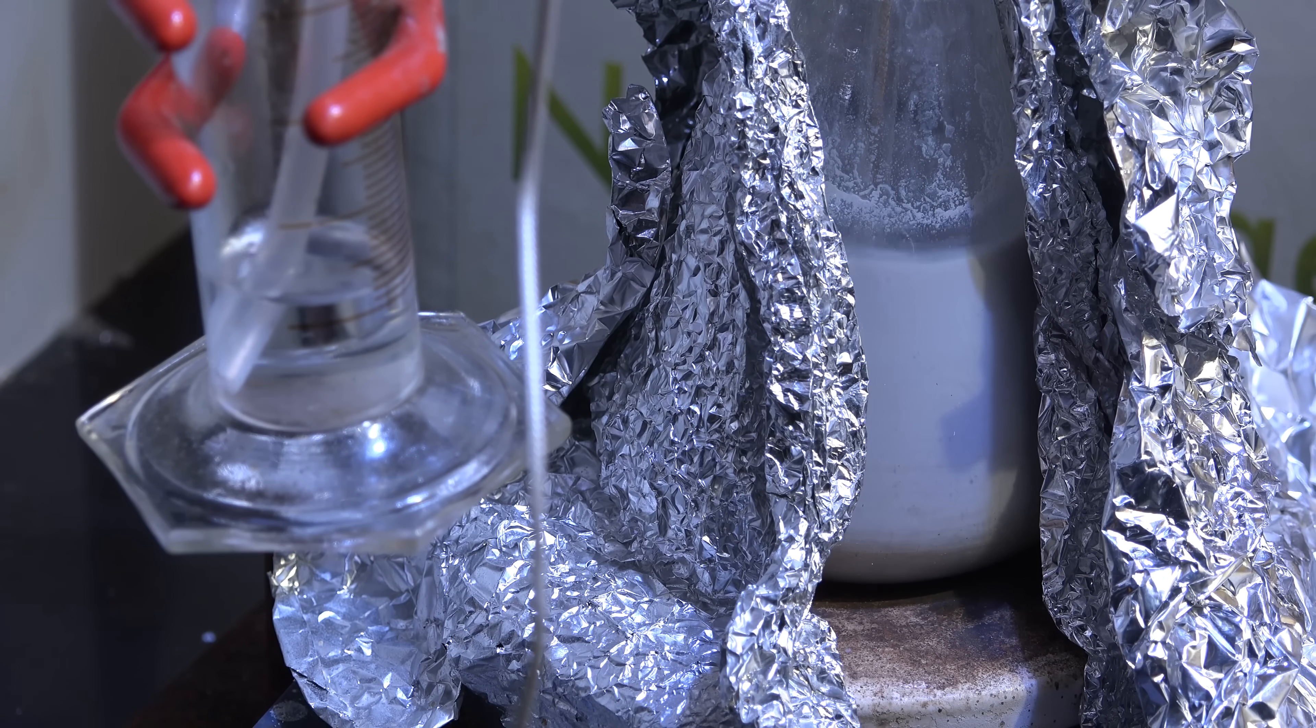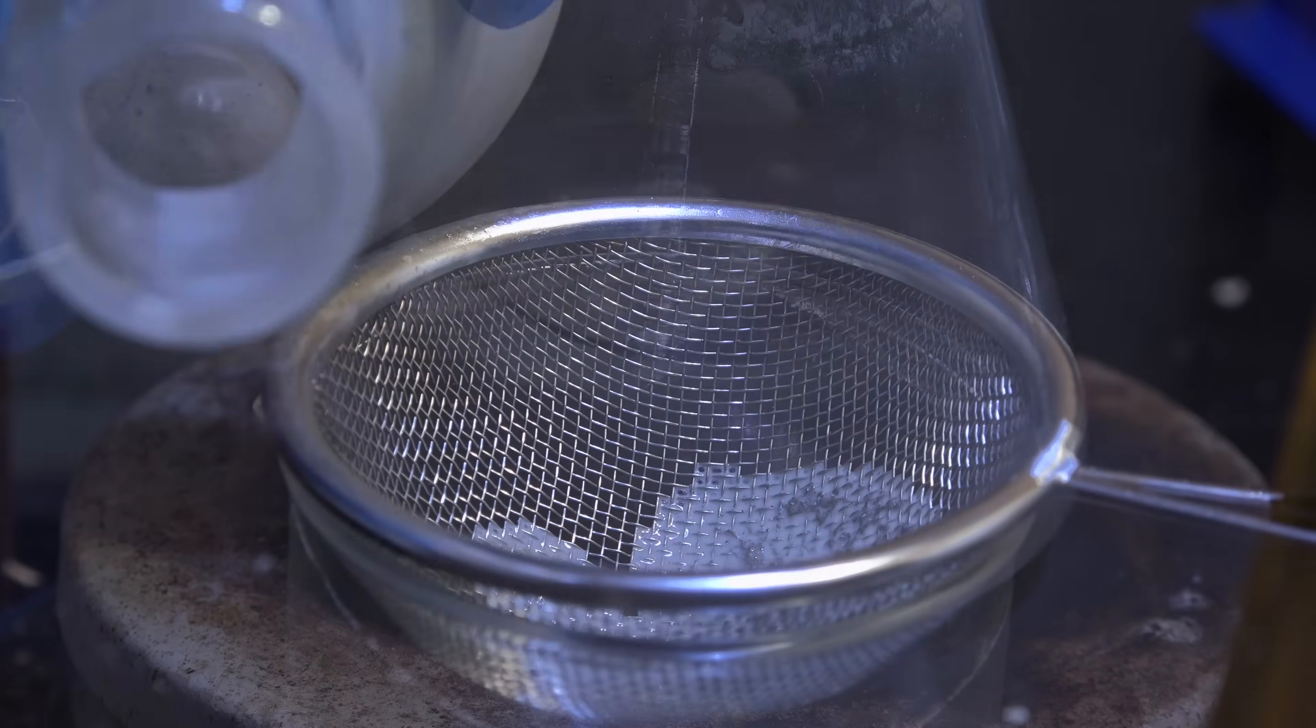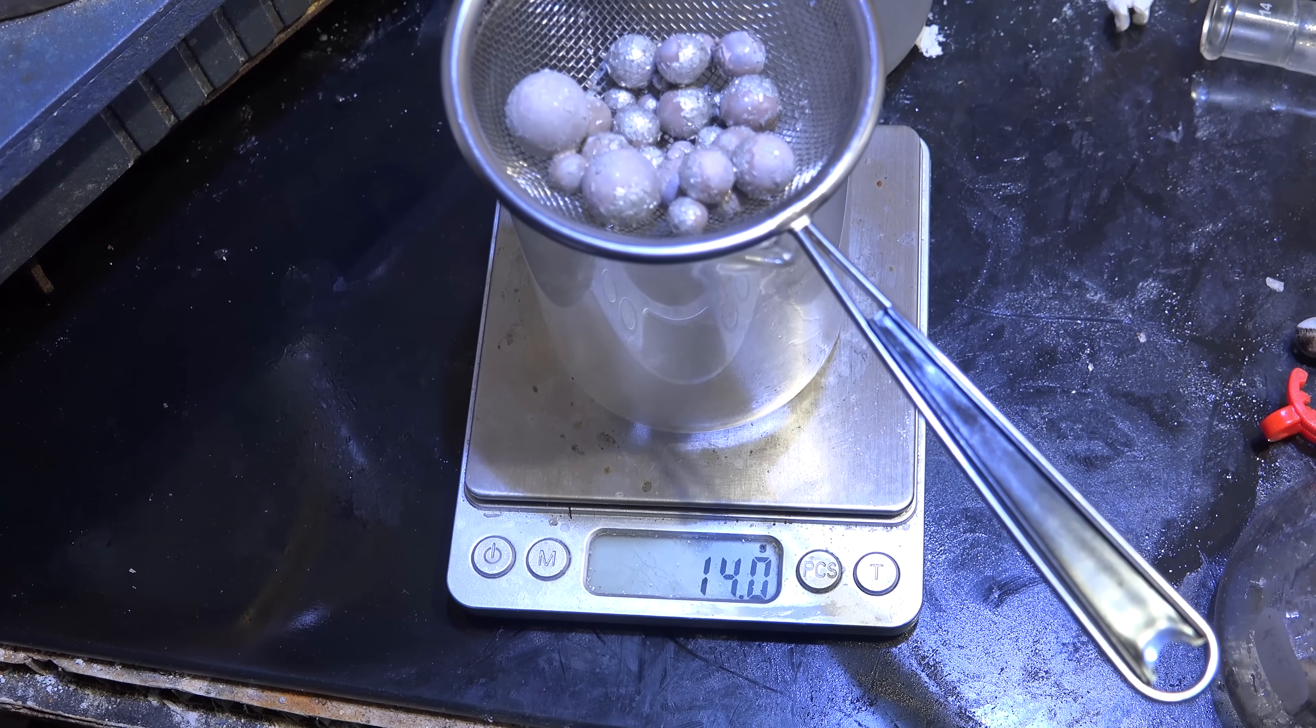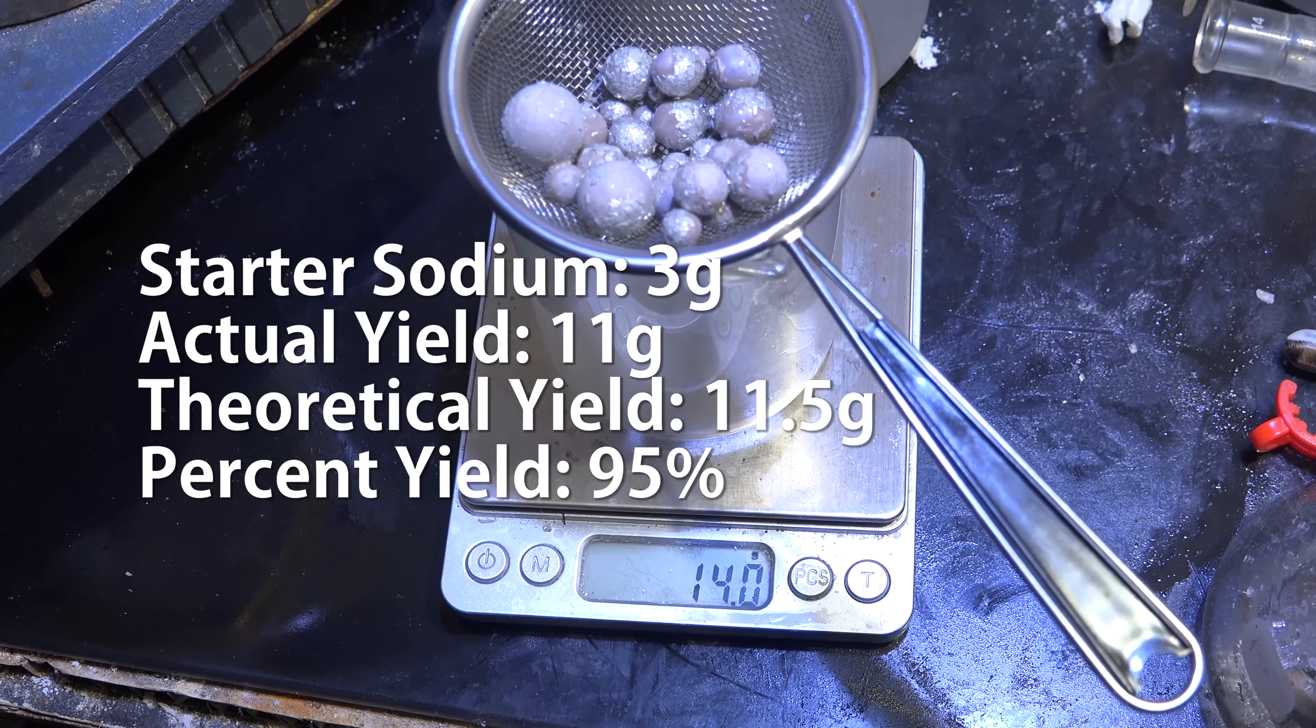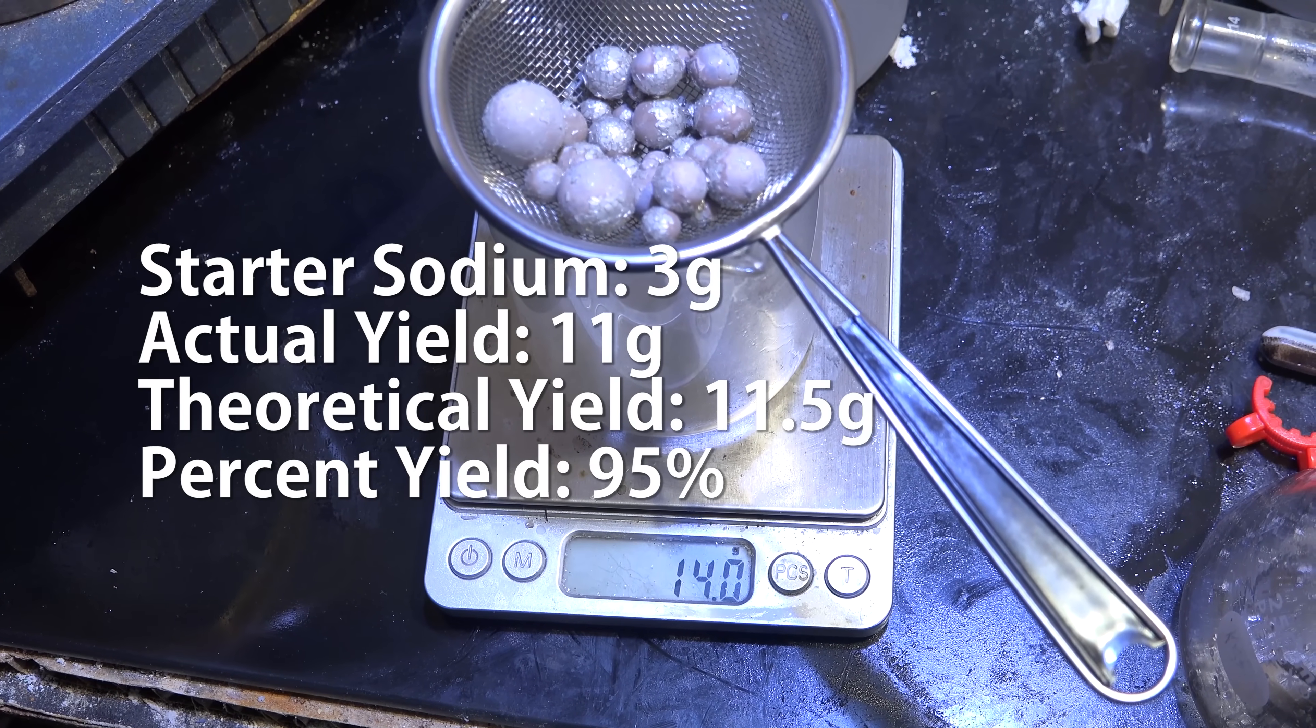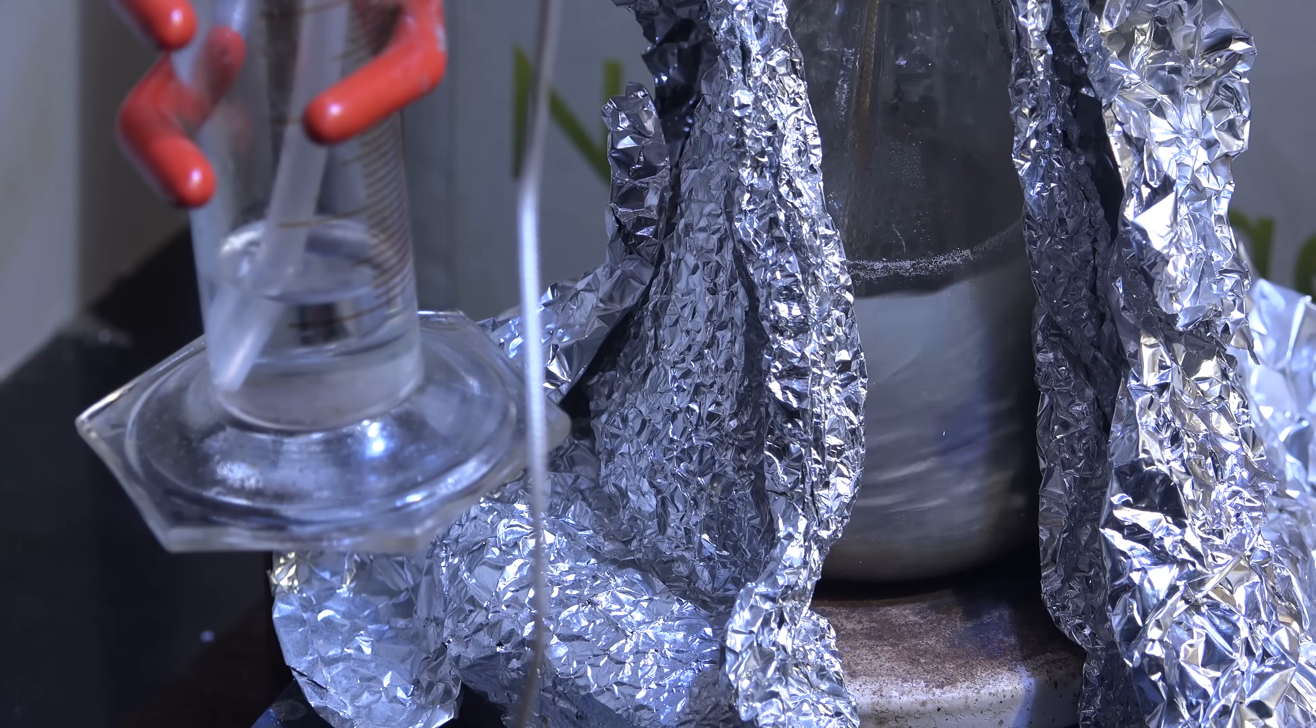In fact bubbling was extremely vigorous at first and slowed to a crawl after just 20 hours. I processed the reaction to get a yield of 14g but since we started with 3g of jumpstarter sodium, our actual yield is 11g or 95%. This is amazing, I honestly wish I knew of this before I started so I didn't have to spend so much time and effort making my own tertiary alcohols.